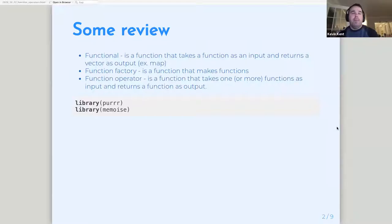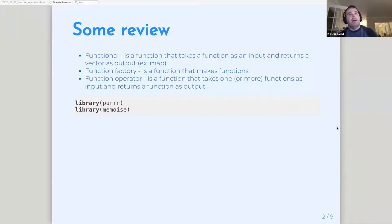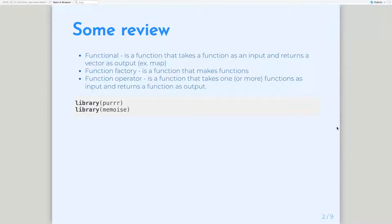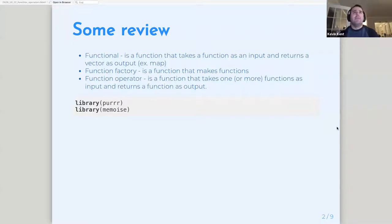Just to have a little bit of review and also connections to the previous chapters. We saw chapters on functionals, function factories, and now function operators. They're all kind of slightly similar — they all deal with either taking functions as arguments, outputting functions, or both. A functional is like the purrr family of functions, like map or lapply, which takes a function as an input and returns a vector as output. You have a list or vector of arguments and you apply them using a function over and over again.